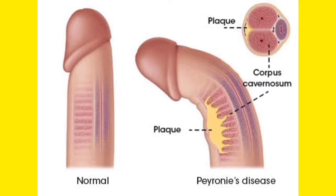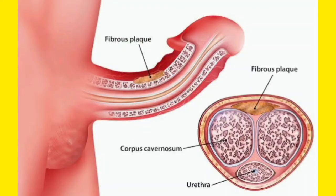Peyronie's disease is basically a curvature of the penis. This disease causes a kind of bending of the penis. Why does this occur? Basically, as you can see in the picture, plaques are formed. These are acquired inelastic scars — they have no elasticity — and they are formed at the tunica albuginea of the penis.